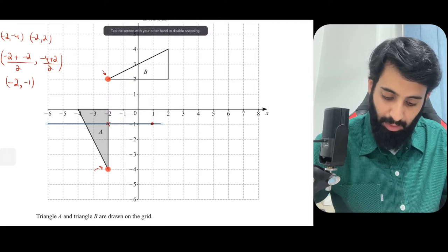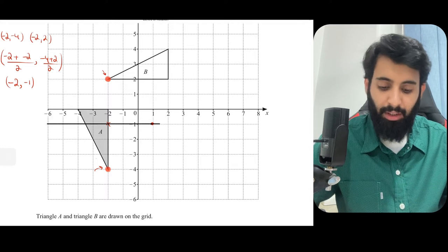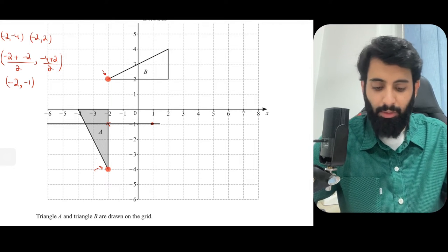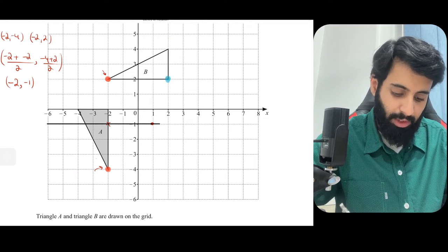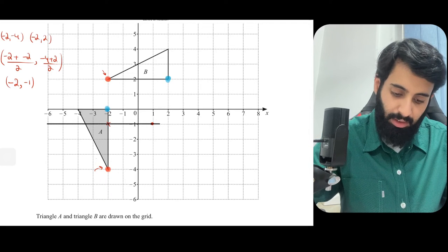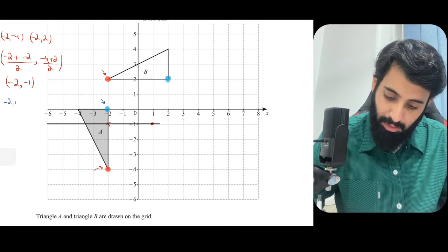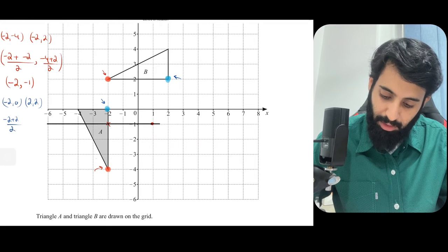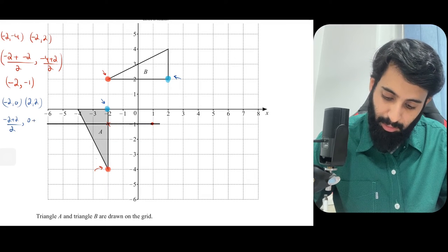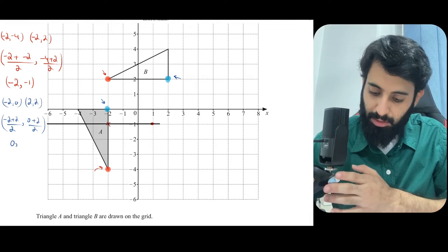We've drawn the perpendicular bisector without a ruler and compass — just by counting boxes. Now we do the exact same thing for a different set of points, the ones highlighted in blue. The coordinates are (-2, 0) and (2, 2). Midpoint: x = (-2 + 2) / 2 = 0/2 = 0; y = (0 + 2) / 2 = 2/2 = 1. So the midpoint is (0, 1).